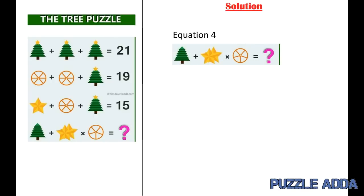Now the last equation, equation 4, which we need to solve says a tree but without a star plus 2 stars into circle inside their 5 lines not 6 lines.